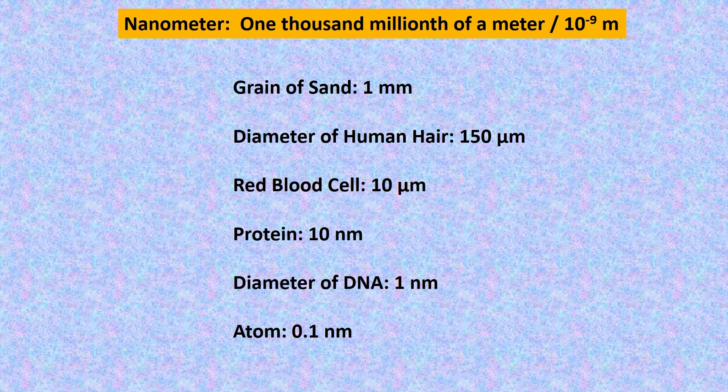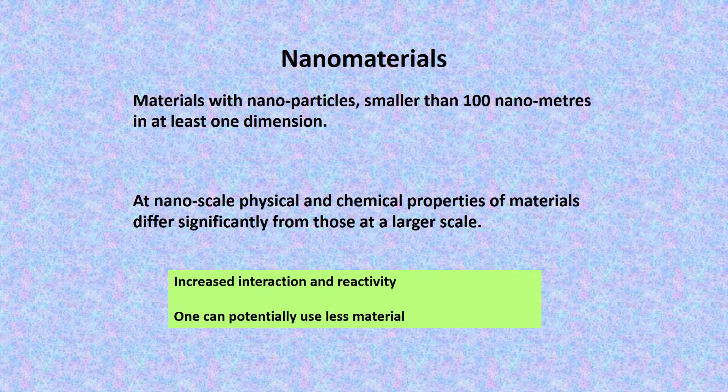This is just to give you an idea about what scales we are talking about when it comes to nanotechnology. Nanomaterials are materials with nanoparticles which are smaller than 100 nanometers in at least one dimension.